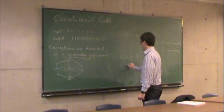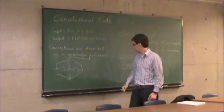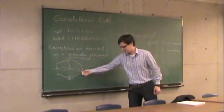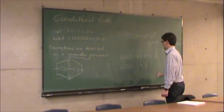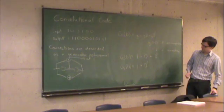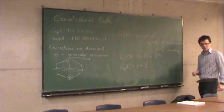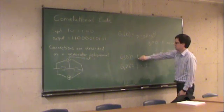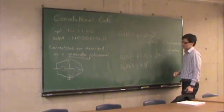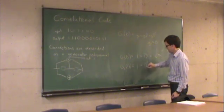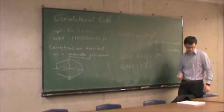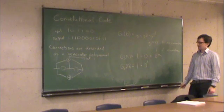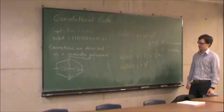For the second output: there's a connection to the input, so G0 is 1; no connection after the first flip-flop, so G1 is 0; and a connection after the second flip-flop, so G2 is 1. The pertinent information is the degree of the polynomial — you know there are two flip-flops — and for the first output, the input, first flip-flop, and second flip-flop are all connected to the mod-two sum. There are good mathematical reasons to describe it this way, but it's also for convenience so you don't have to draw the diagram. I can just give you these two polynomials and you'll know how to construct the encoder.